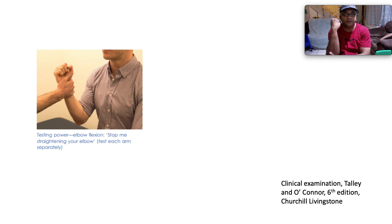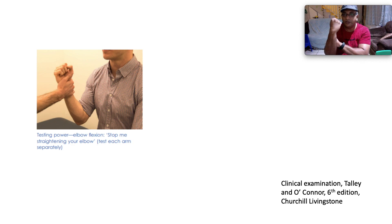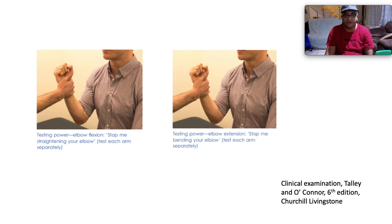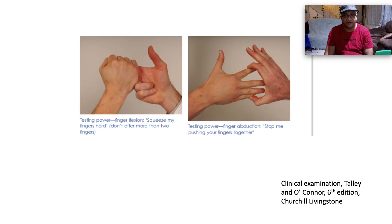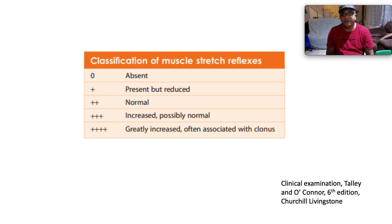When you ask the patient to bring the elbow in, that tests elbow flexion. For wrist extension, ask the patient to cock the wrist up and push against you; test wrist flexion in the other direction. For finger flexion, ask the patient to squeeze your fingers hard but don't offer more than two fingers. For finger abduction, ask them to stop you from pushing their fingers together.